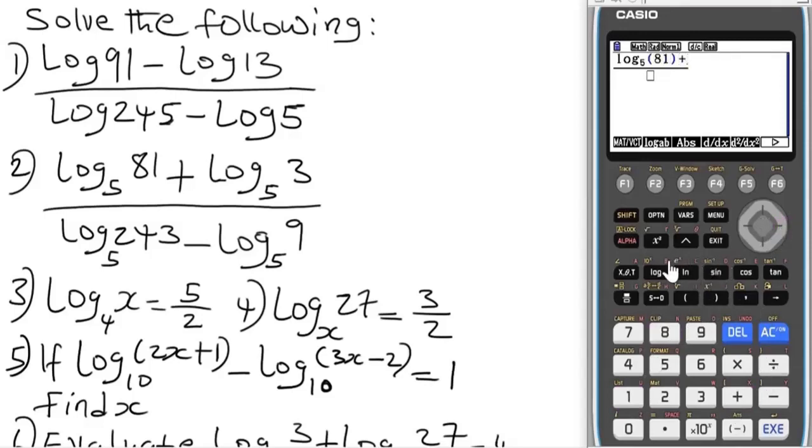Let's include the base here. We have base 5, log base 5 of 81, plus log base 5 of 3, over log base 5 of 243 minus log base 5 of 9. Press equals and we get 1.66.